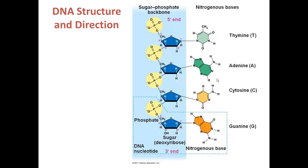Let's review what the structure of a nucleotide is. A nucleotide is composed of a nitrogenous base, a 5-carbon sugar — in the case of DNA, deoxyribose — as well as a phosphate group. Remember also that DNA has direction. The 5' end has a phosphate group that is attached to the 5' carbon of that nucleotide, whereas the 3' end has a 3' hydroxyl group that is attached to the 3' carbon of that nucleotide.